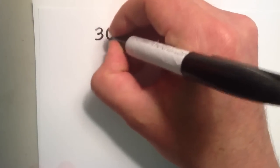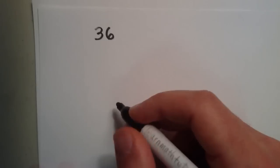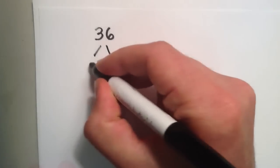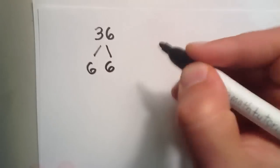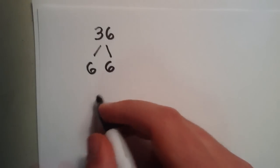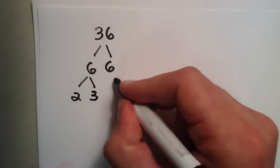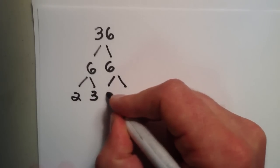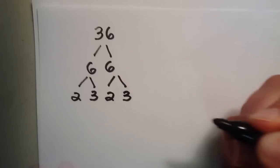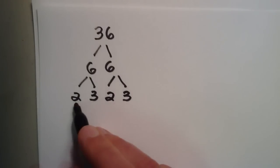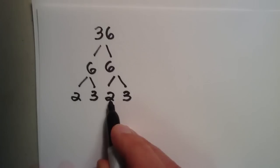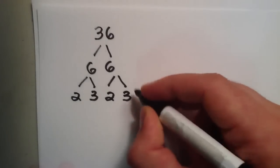So the first number I want to start with is 36. Now 36 is the same thing as 6 times 6. Now 6 is the same thing as 2 times 3. And we can go ahead and do it to this 6 as well, 2 times 3. So basically what this says now is 2 times 3 times 2 times 3 equals 36.